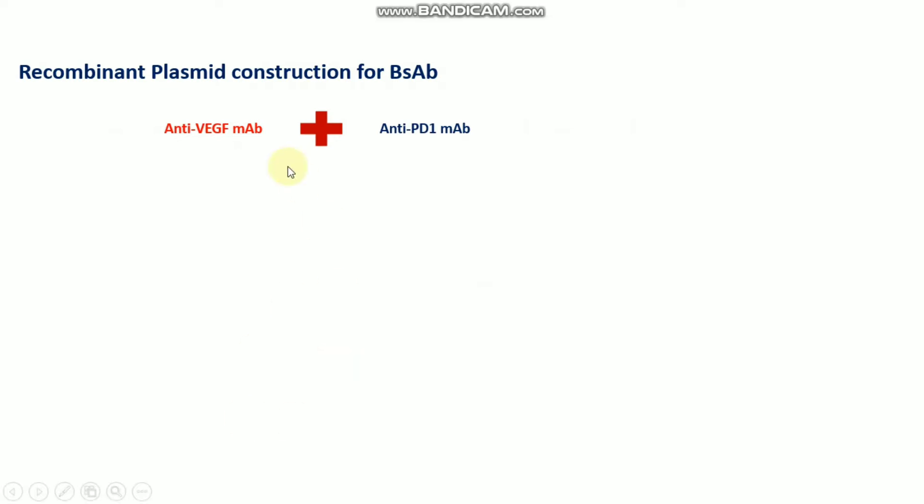By using ScFv, we can join two different monoclonal antibodies to form a bispecific antibody. For example, I chose two different monoclonal antibodies: the anti-VEGF monoclonal antibody and the anti-PD-1 monoclonal antibody, to join them by ScFv and form the VEGF and PD-1 bispecific antibody.